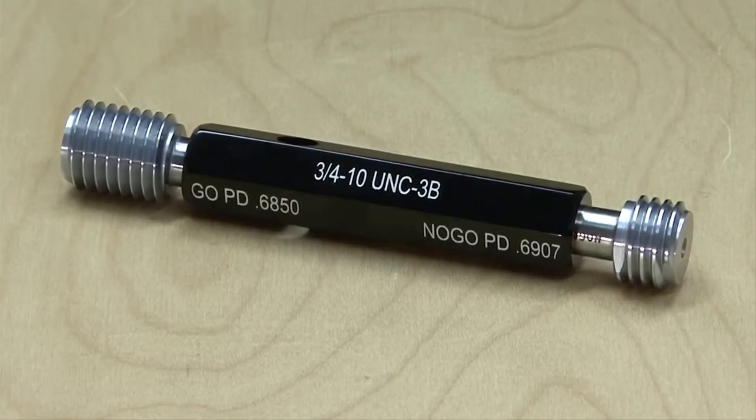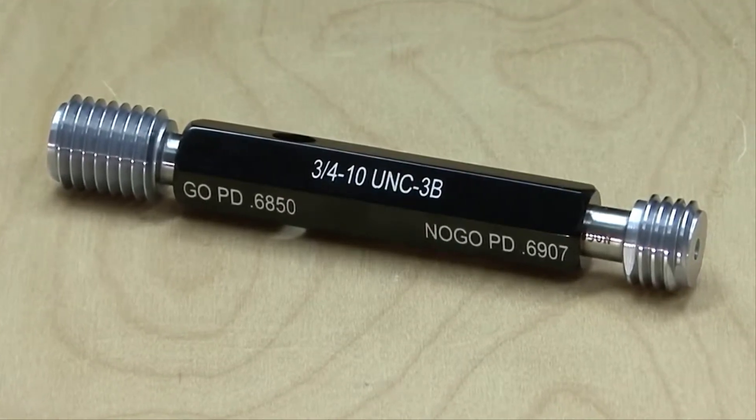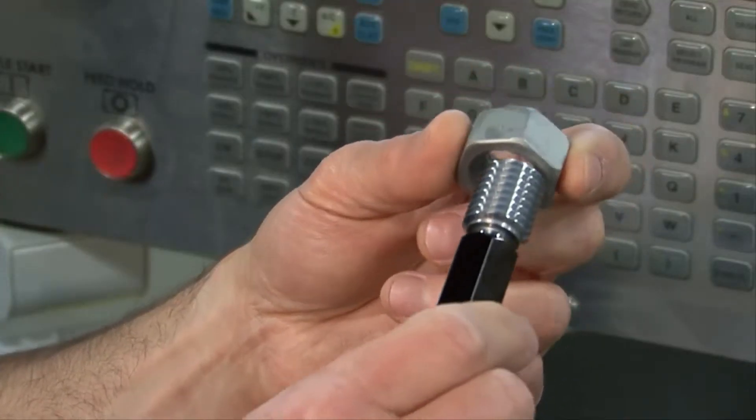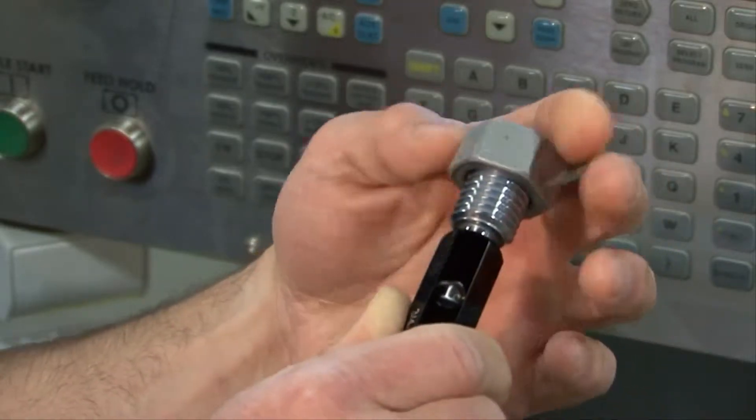The go and the no-go thread plug gauge is the simplest and most economical method of inspecting internal screw threads. Go and no-go thread plug gauges are very easy to use.